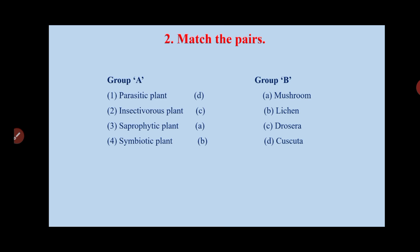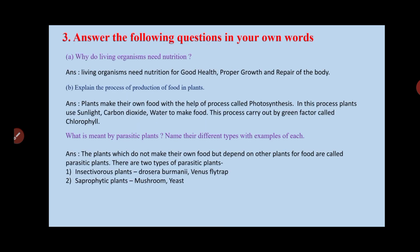The second question is to match the pair. Two groups are given — Group A and Group B. Group A has parasitic plants, insectivorous plants, saprophytic plants, and symbiotic plants. Group B has mushroom, lichen, Drosera, and Cuscuta. Cuscuta is a parasitic plant. Drosera is an insectivorous plant. Mushroom is saprophytic. Lichen is symbiotic.